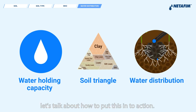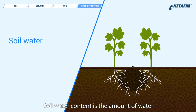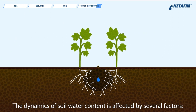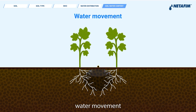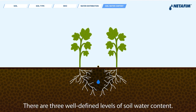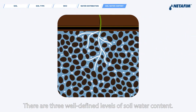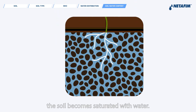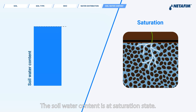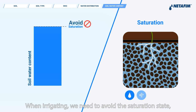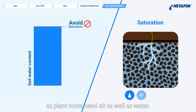Now we've got all the basics straight. Let's talk about how to put this into action. Soil water content is the amount of water in the soil at any given moment. The dynamics of soil water content is affected by several factors: water movement, plant consumption, evaporation, and rain or irrigation. There are three well-defined levels of soil water content. After rain or heavy irrigation, the soil becomes saturated with water — the soil water content is at saturation state. This occurs when all pores in the soil are filled with water. When irrigating, we need to avoid the saturation state, as plant roots need air as well as water.